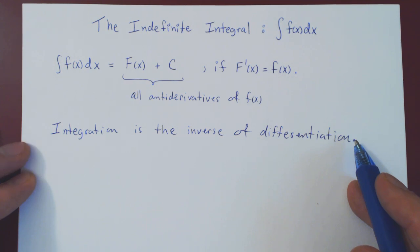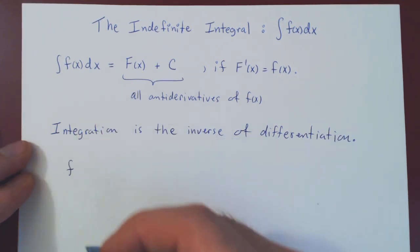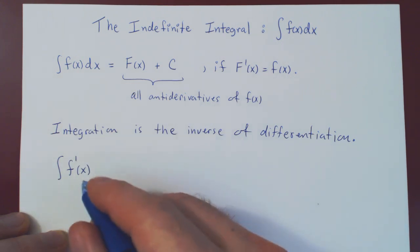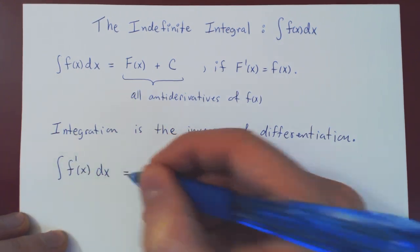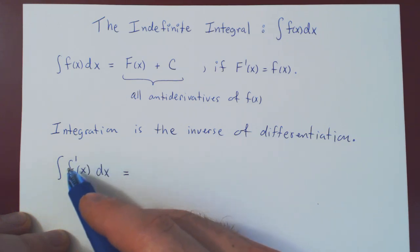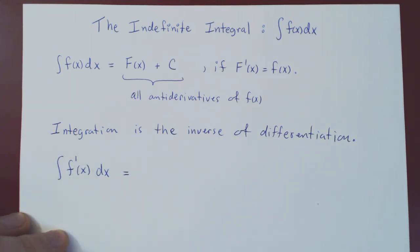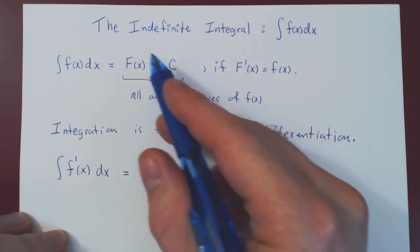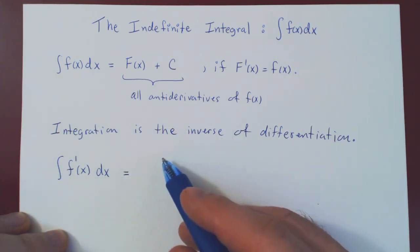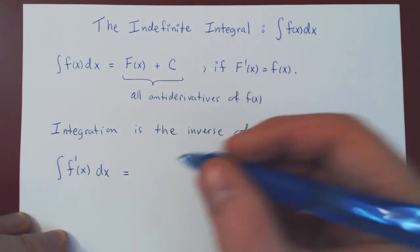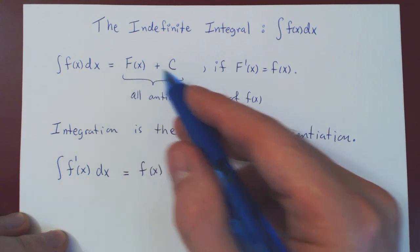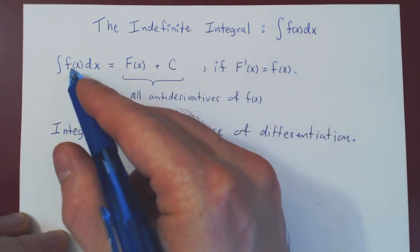Now let's look at why this makes perfect sense. Suppose we have f, and we differentiate it, which gives us f prime of x, and now we integrate it. So: integrate the derivative of f dx. What is this equal to? Well, we are asking for all functions whose derivative is the derivative of f of x. We are looking for all antiderivatives of the original function. So what function has as its derivative the derivative of f of x? It obviously is f of x.